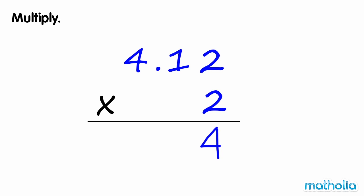Next multiply the tenths. 2 times 1 tenth equals 2 tenths. Write the decimal point.